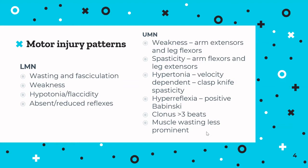Upper motor neuron signs present with weakness, particularly of arm extensors and leg flexors, with opposing spasticity in arm flexors and leg extensors. Classically this is a stroke patient walking with their arm tucked up and their leg straight, dragging behind — circumducting. They get hypertonia that is velocity dependent, sometimes described as clasp-knife spasticity, plus hyperreflexia with exaggerated responses.